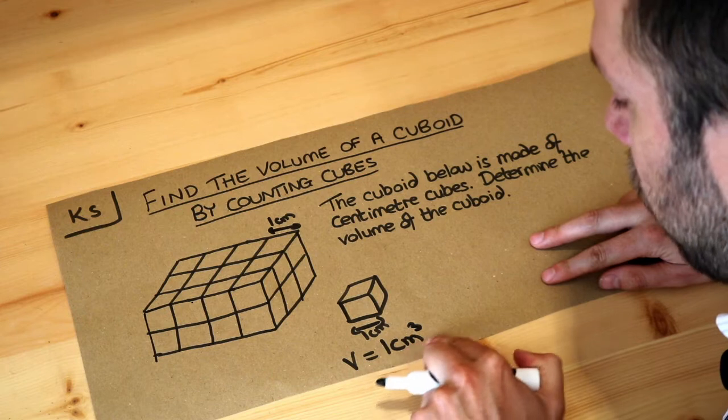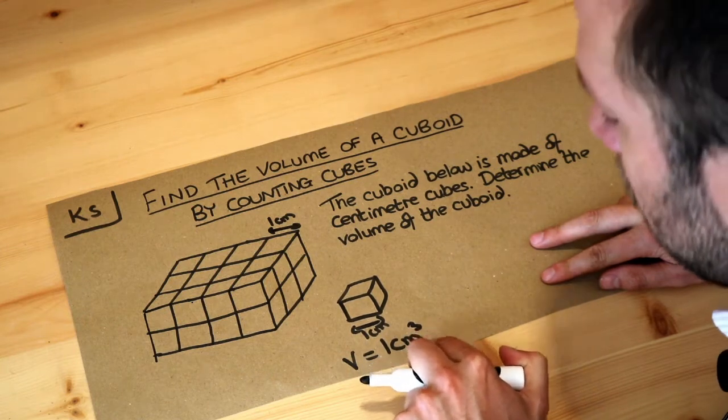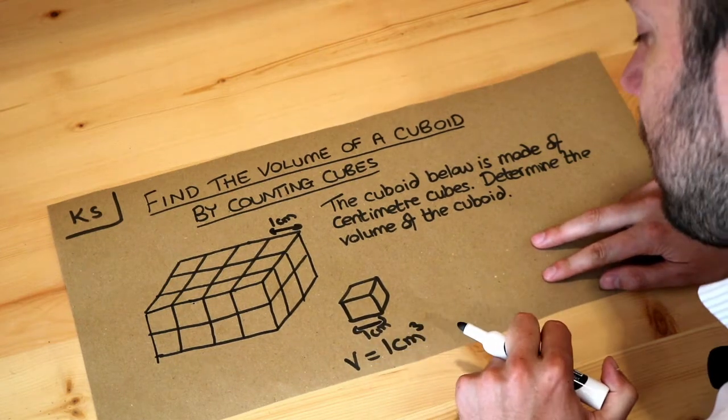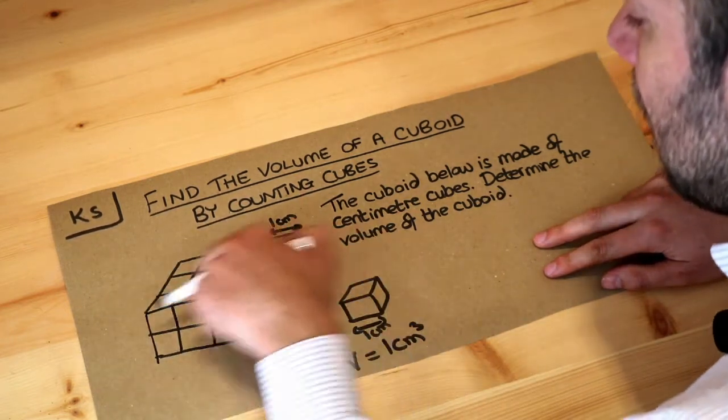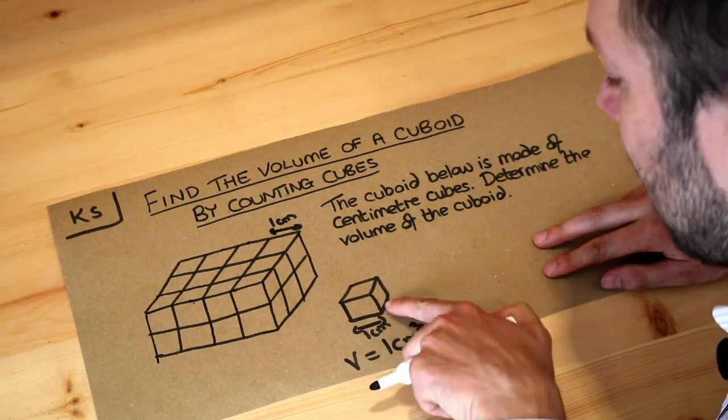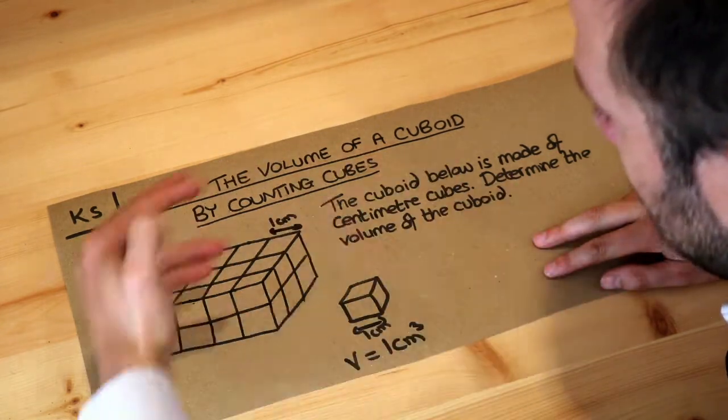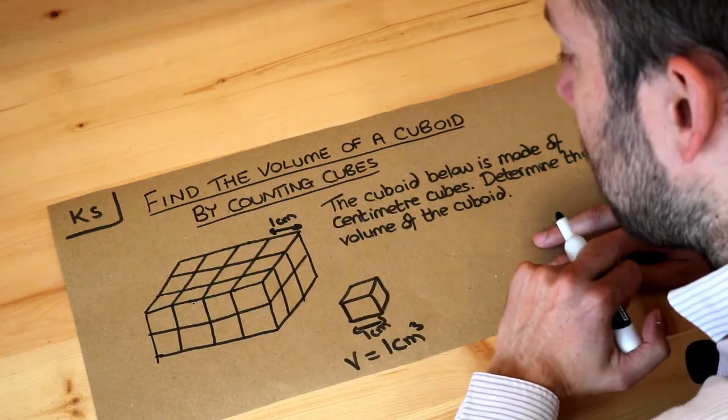A unit of volume would be something like centimeters cubed, meters cubed, or millimeters cubed. If we want the total volume, the total amount of space it takes up, we just need to count the number of little cubes.